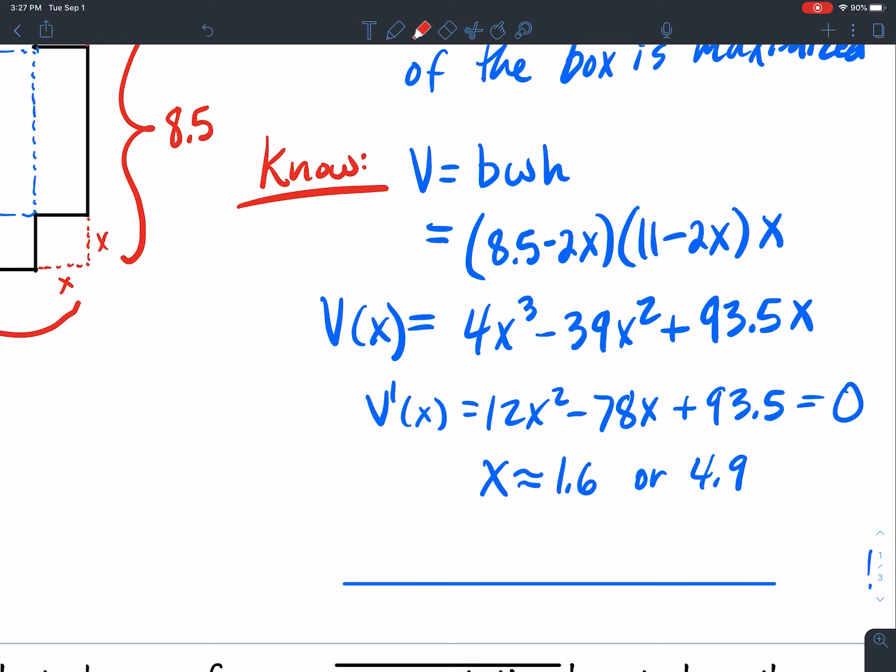I'm going to use the first derivative test with my critical numbers here. If I plug into my derivative, pick a point, maybe x equals zero, then v prime of zero gets me zero, zero, and then positive. So that's a positive number producing an increasing situation here. If I pick x equals two here and plug two into this, that's going to make it negative. So that means we're decreasing. By the first derivative test, we go from increasing to decreasing, so I have a relative maximum at 1.6.